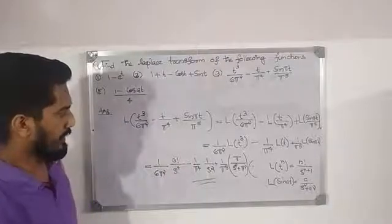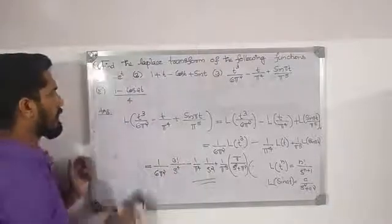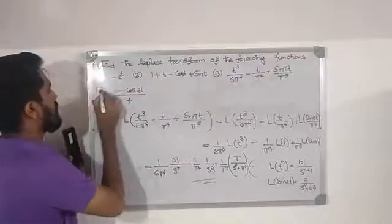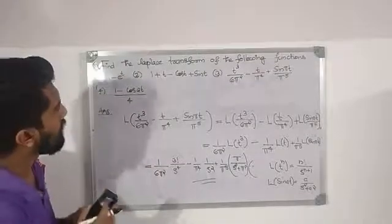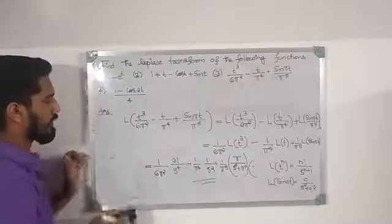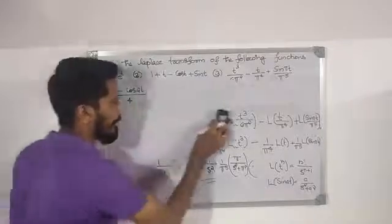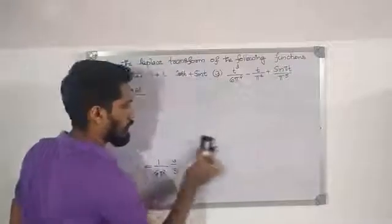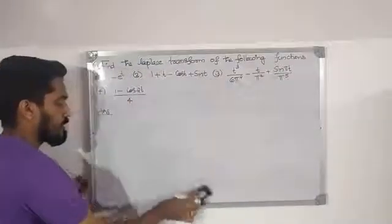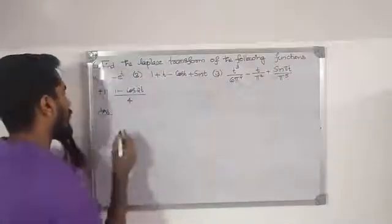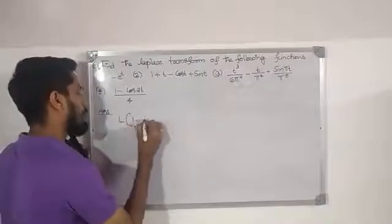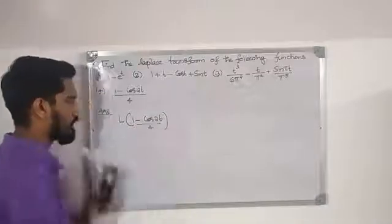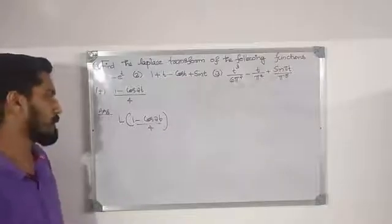Moving to the next problem, which is the fourth or fifth one. We want to find L{(1 - cos(2t))/4}. We write 1 - cos(2t) divided by 4.